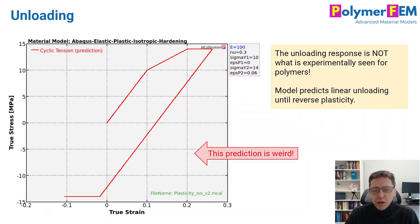How about unloading? This is one of the weaknesses of isotropic hardening plasticity. We load it up to some strain value, and then we start unloading. Well, what happens during unloading is that we get elastic unloading until we get reverse plasticity. So it's linear elastic until we get reverse plasticity at the same level of yield stress as we had in the other side, in tension in this case. And that's not what happens with any polymer. This is not really realistic compared to experimental data. This is just how this material model behaves.